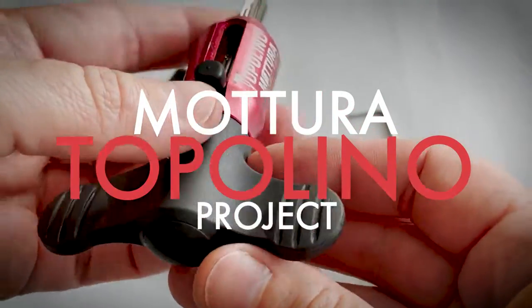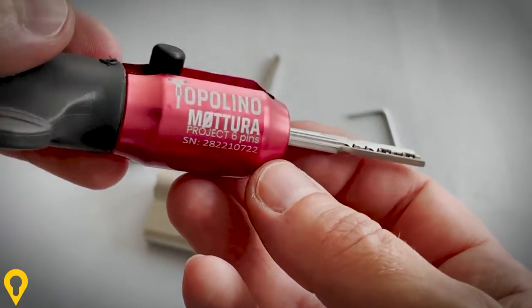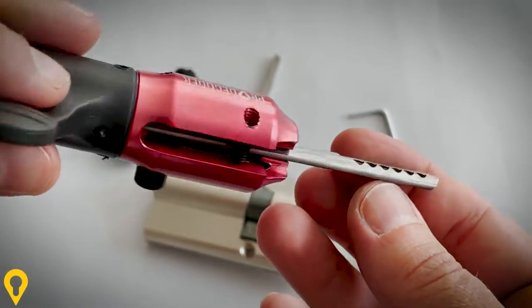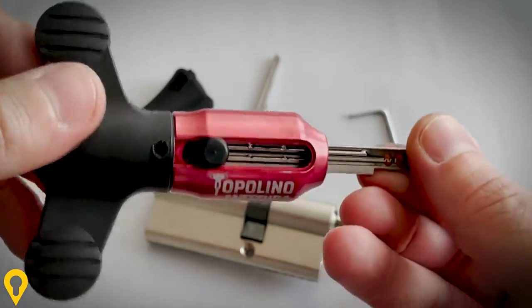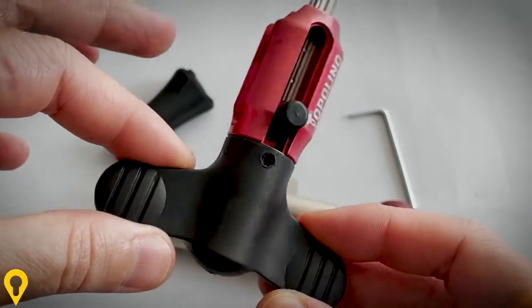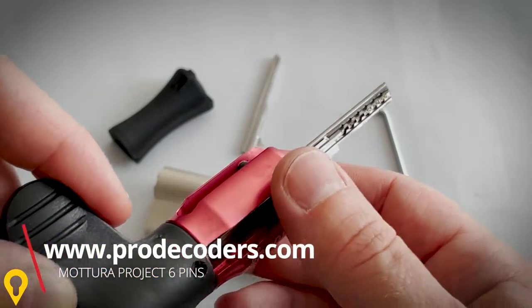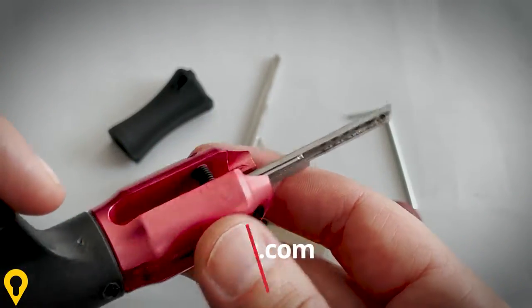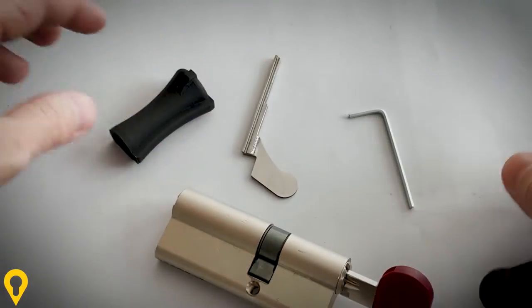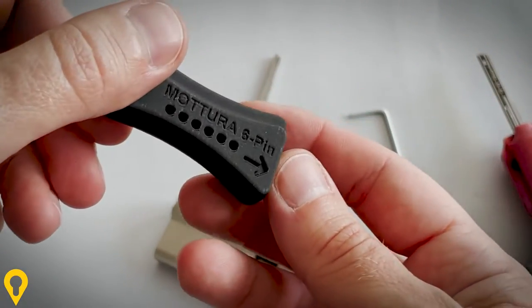Hello there, this is video instructions on Topolino Motora project six pins. This is how the decoder comes to you. It has a handle and sliding button that protects the decoder when you insert and whenever you extract.